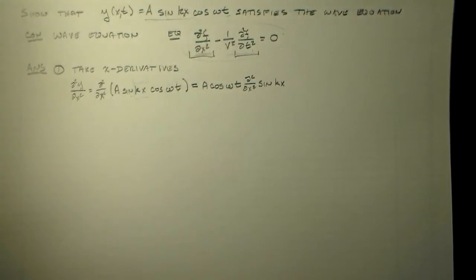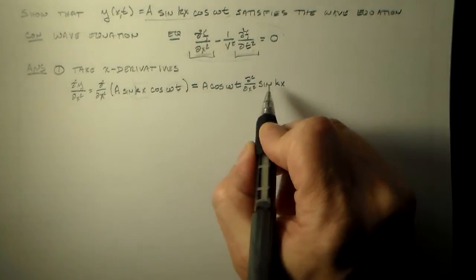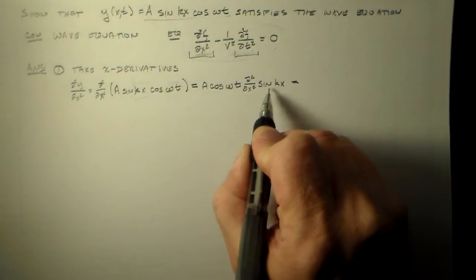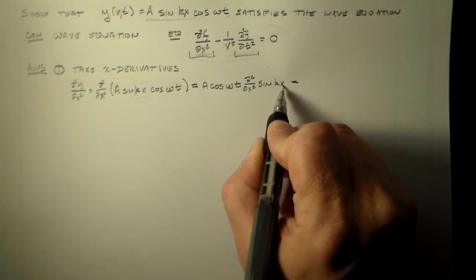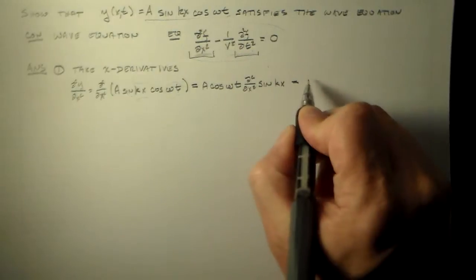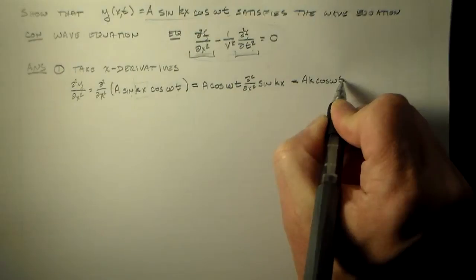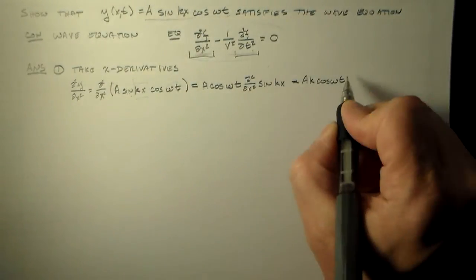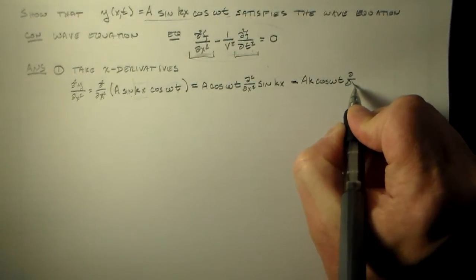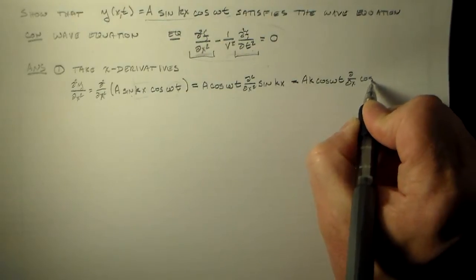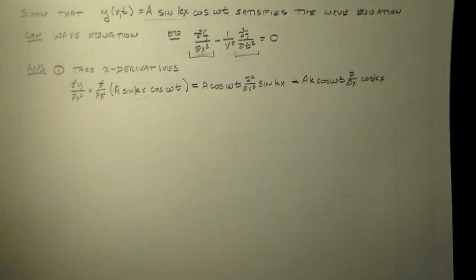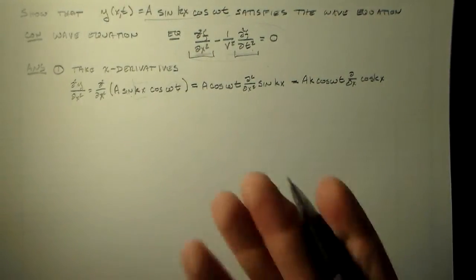Alright, so let's see what good things can we do. Well, we can just take the first of these derivatives. That's going to be k cosine kx, right? So we have ak cosine omega t, because the k is just a constant, so it will come out. d dx cosine kx. And then we just finish up, we do this last derivative.